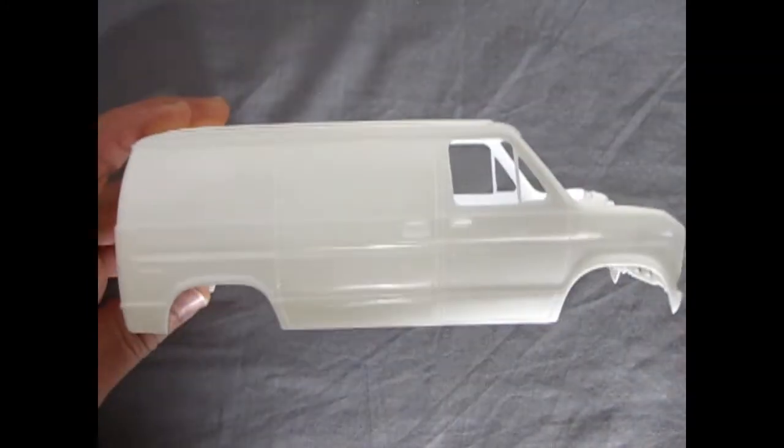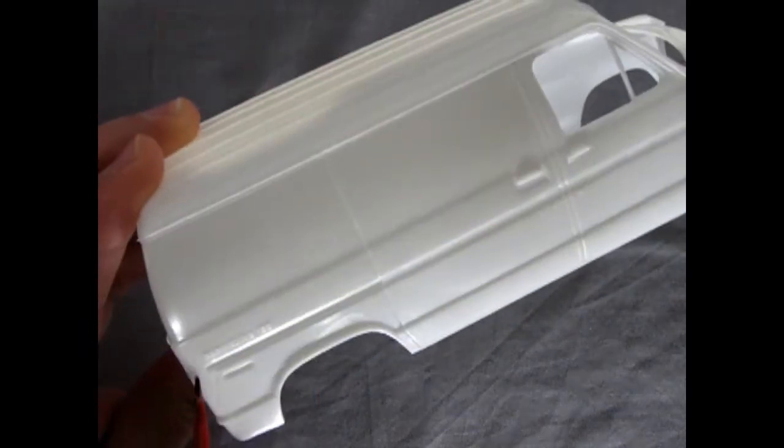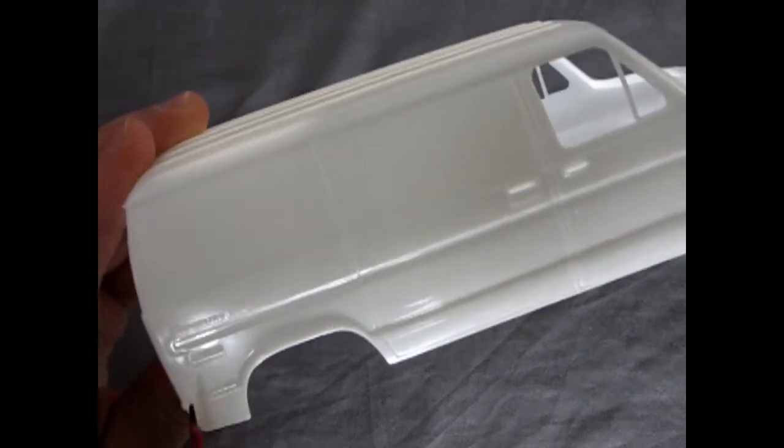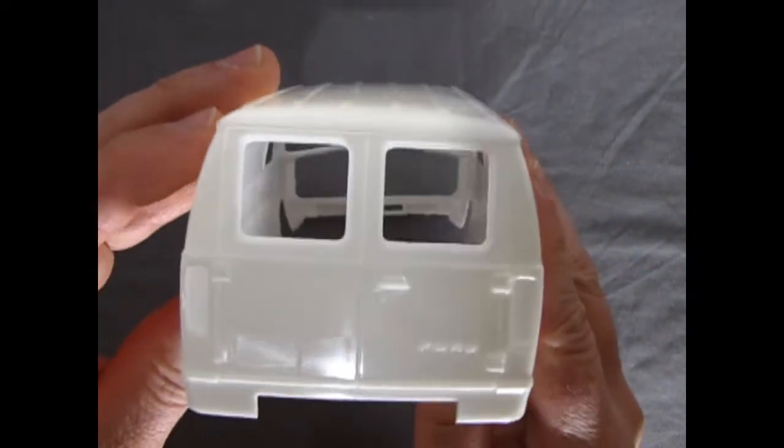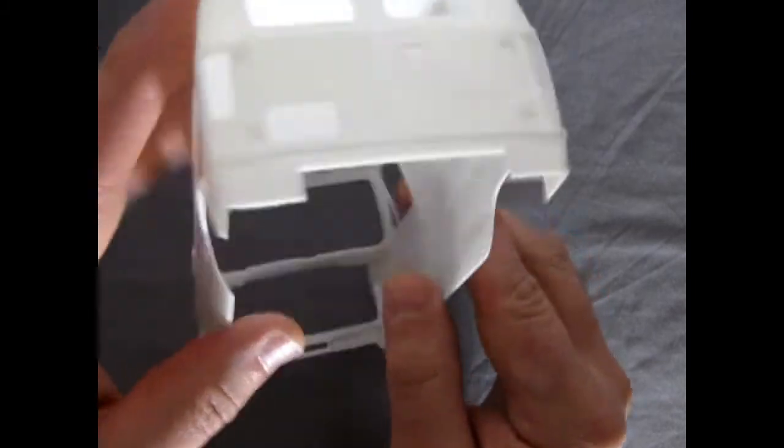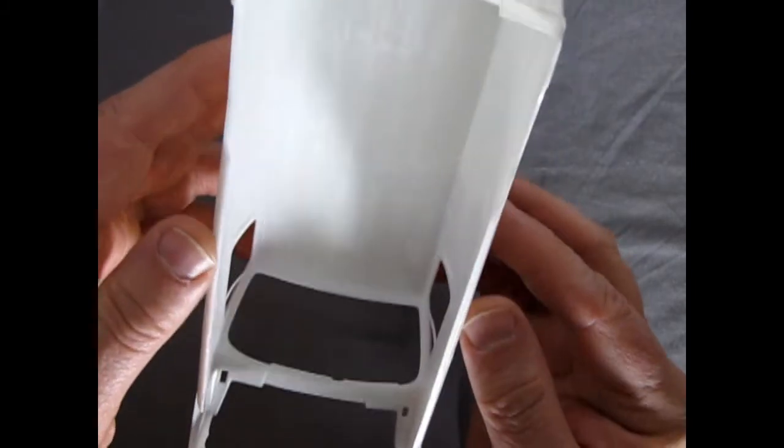Now we can see this is a nice kit. We have the Econo line right here on the sides. Spots for our turn signals to go into. Very nicely done. The back looks correct with the Ford stamped on it.